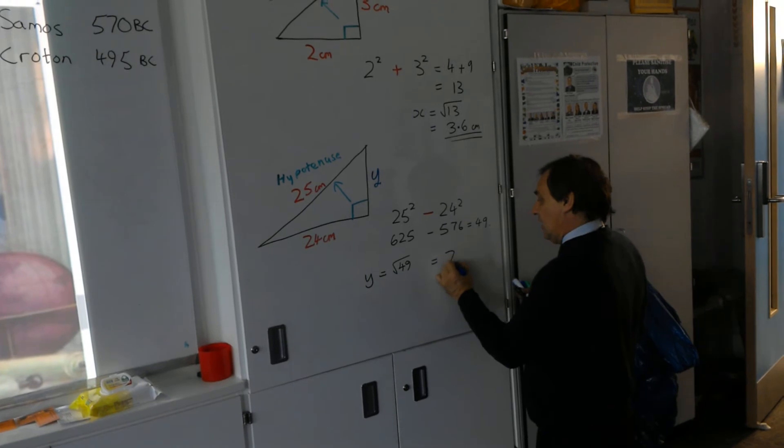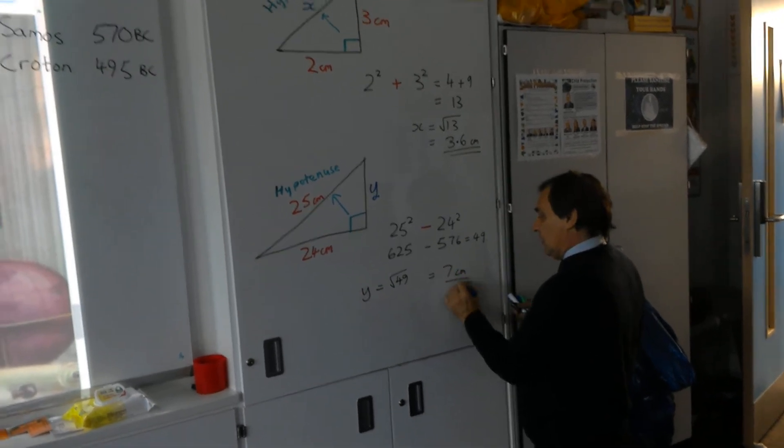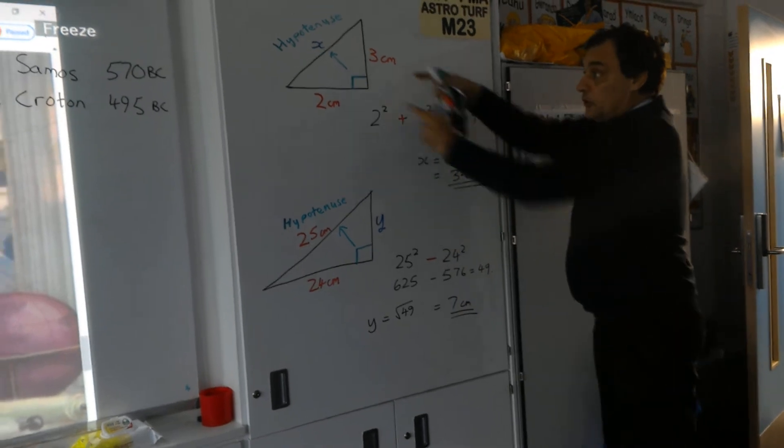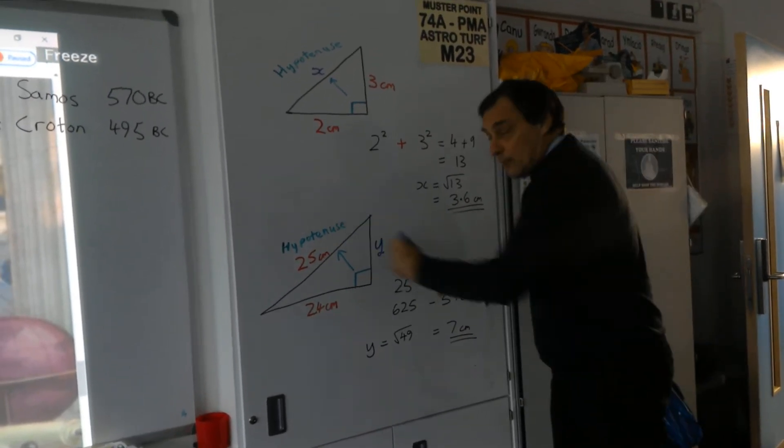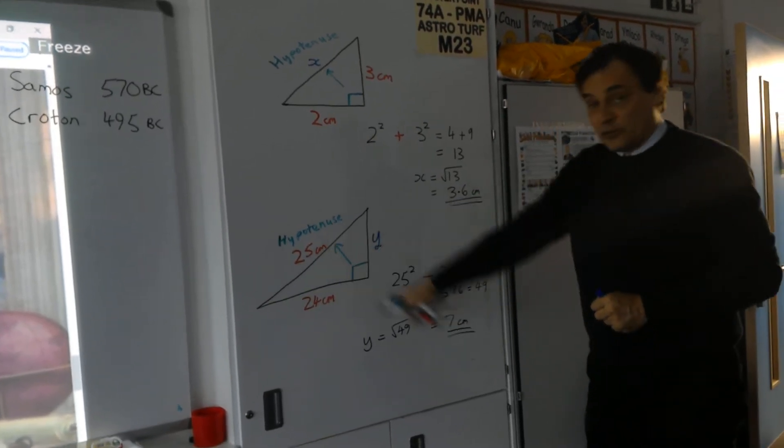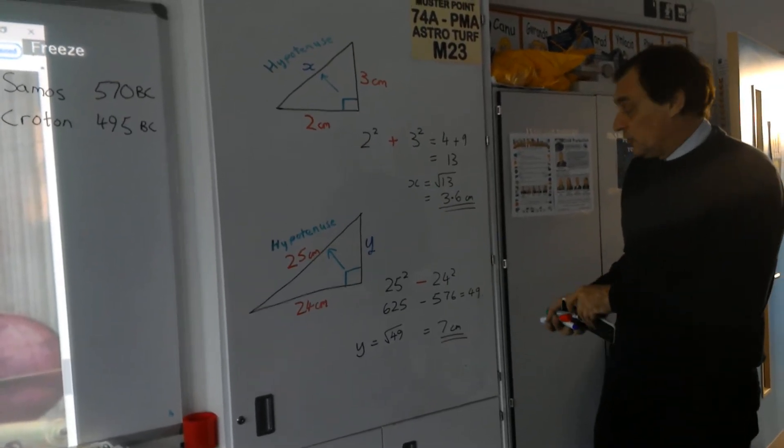So to find out what y is, I take the square root of 49, which gives us exactly 7 centimetres. So if I want to find the hypotenuse, I add the two squares together and square root. If I've got the hypotenuse, if I want to find the shorter side, I take away from the square of the longest side and I square root as well.